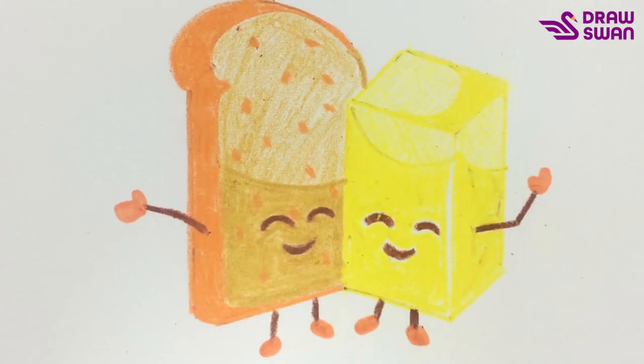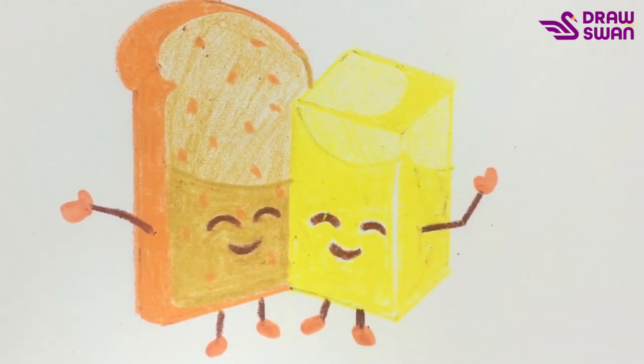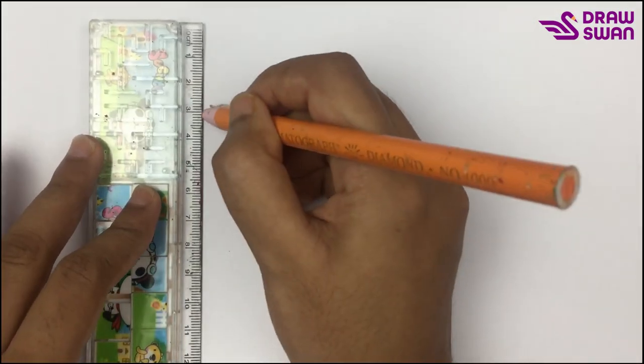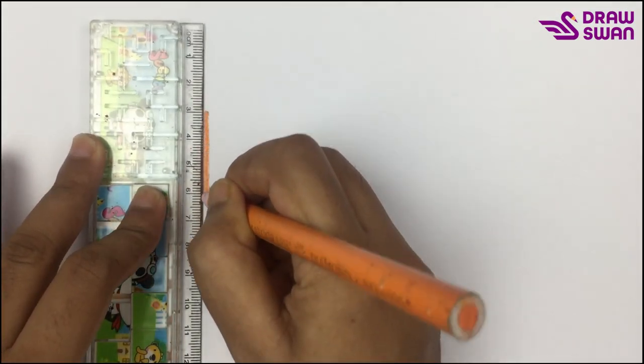Hi there, welcome to a drawing tutorial. Today we will see how to draw bread and butter. Here you can see that I'm using my ruler and my orange colored pencil to draw the bread and butter.